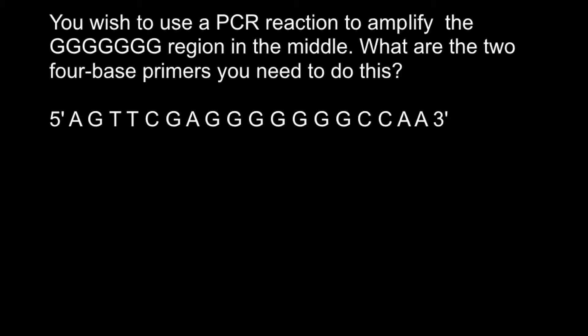Here is the sequence that we want to amplify. Even if you know genetics well, probably your first impression would be to use the flanking regions — this is one flanking region and this is another flanking region. As we said, we have to use four-base primers, and let's try to solve this problem that way first, and then I will show you how we actually have to do it.